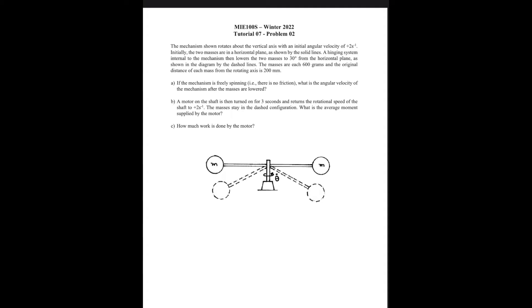Let's start with our first question. The mechanism shown rotates about the vertical axis with an initial angular velocity. Initially, the two masses are in a horizontal plane as shown by the solid lines. A hinging system internal to the mechanism then lowers the two masses to 30 degrees from the horizontal plane, as shown by the dashed lines. The masses are each 600 grams and the original distance of each mass from the rotating axis is 200 millimeters. If the mechanism is freely spinning, what is the angular velocity of the mechanism after the masses are lowered?